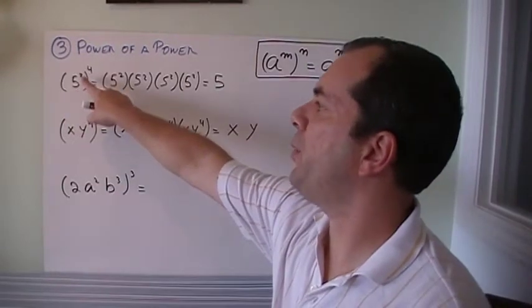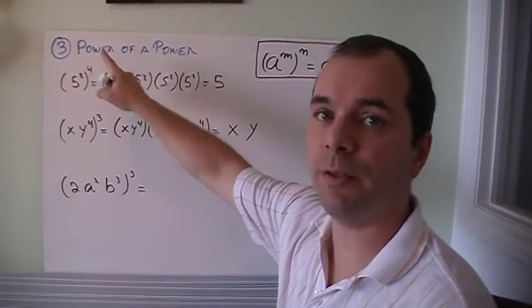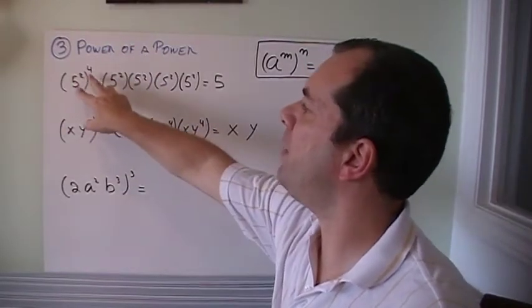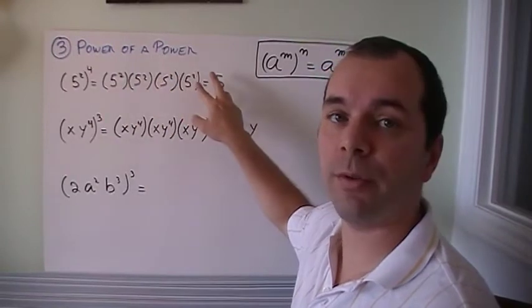If I've got 5 squared to the power of 4, so it's 5 to the power of 2 to the power of 4, what does it mean? Well, it means that I'm going to have 5 squared 4 times, right?